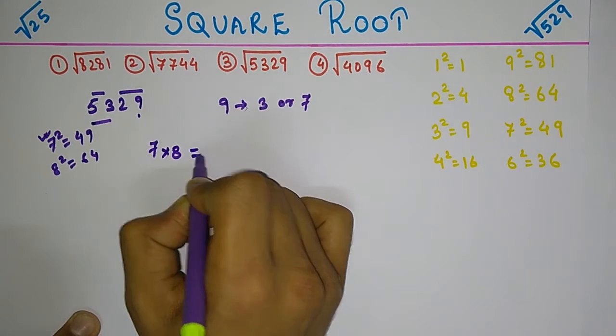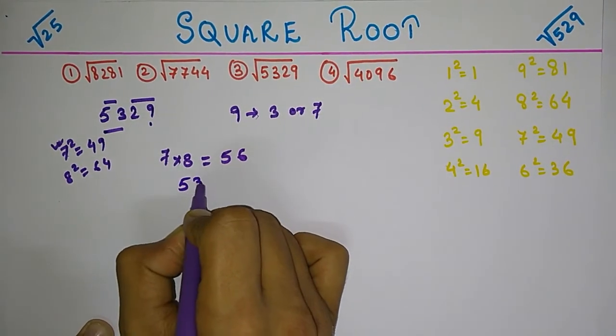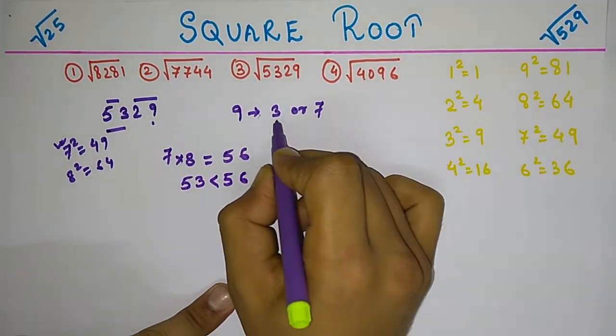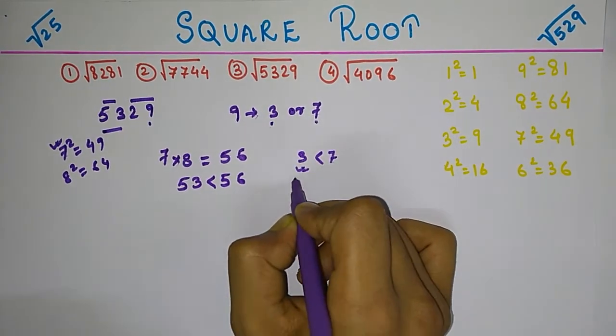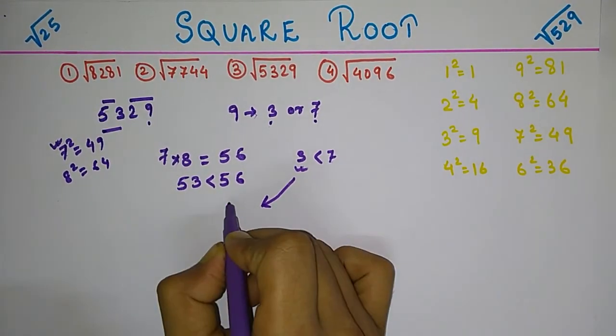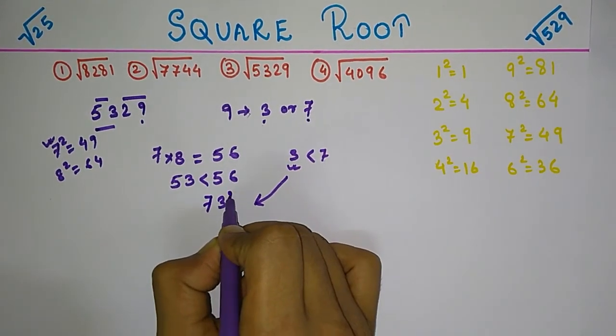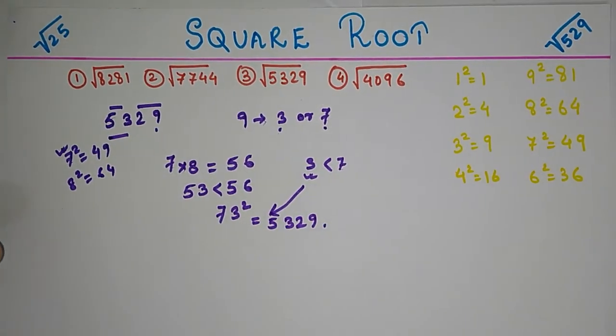Comparing 53 and 56, we get 53 is less than 56. So between 3 and 7, we take the smaller one, 3, which will be the rightmost part, and 7 is going to be the leftmost part. That is, 73 squared equals 5329.